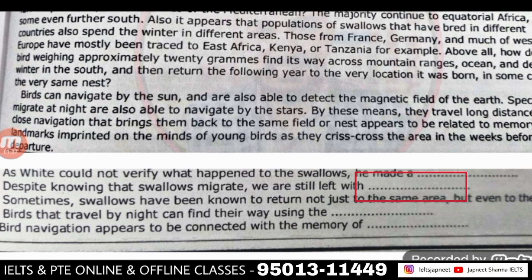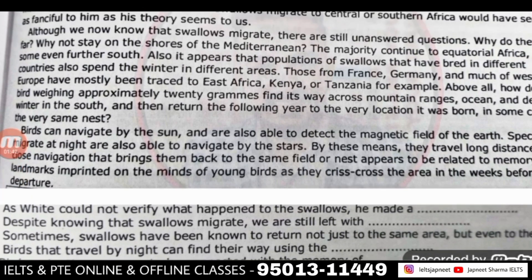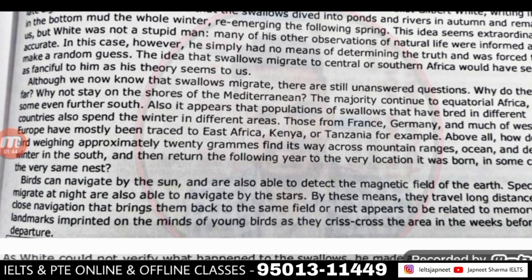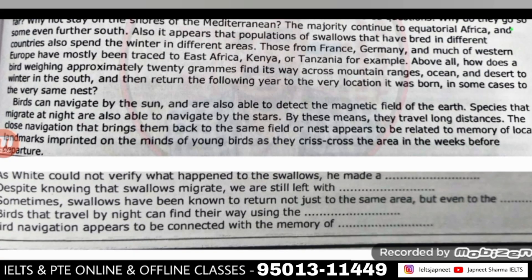Q2: 'Despite knowing the swallows migrate' — यह चीज़ जानने के बावज़ूद — complex structure लगा है — 'we are still left with...' हमारे पास अभी भी क्या चीज़ है? जैसे वहाँ पे भी complex है यहाँ पे भी complex है। Although we now know that swallows migrate — चाहे हमें पता है — swallow जो पंछी होते हैं Mediterranean Sea और अलग-अलग जगहों पर migrate करते हैं — but there are still unanswered questions.